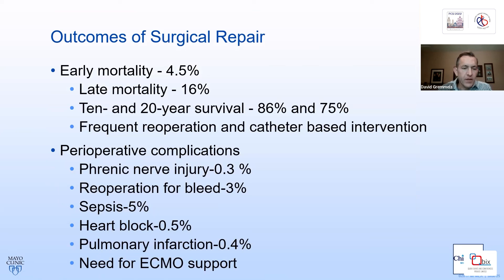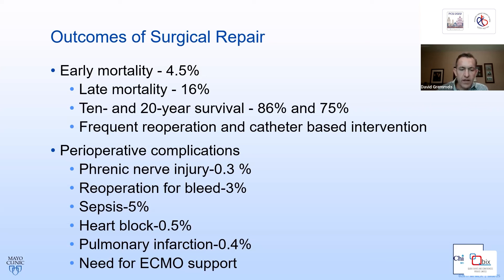The outcomes of surgical repair: early mortality is low, less than 5%. Late mortality is around 16%. Ten-year survival is 86% and 20-year survival is 75%. Early intervention — before patients are malnourished and critically ill — produces better outcomes. All of these patients will have frequent catheter-based interventions and re-operations for conduit replacement or catheter-based melody valve implantation as they get older. Perioperative complications, though relatively limited, include reperfusion injury, and the need for ECMO support is not uncommon in these complex, sick infants.